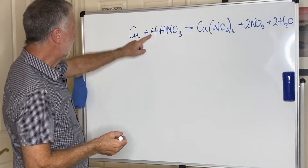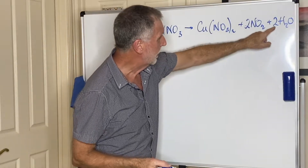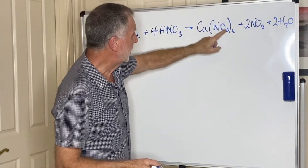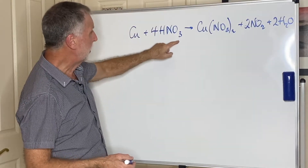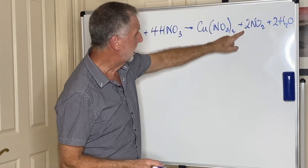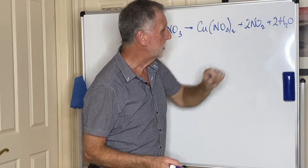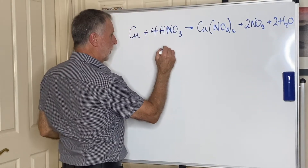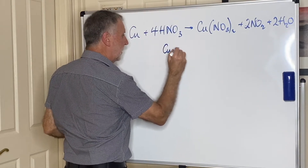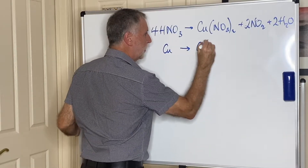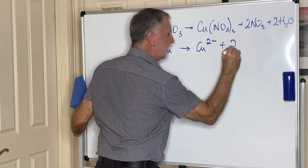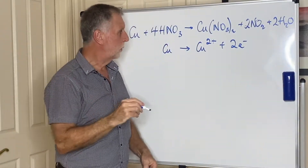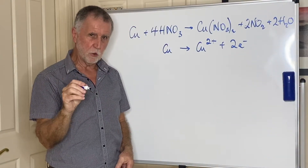The equation is balanced: one copper each side, four hydrogens, four nitrogens — two there and two there — and 12 oxygens: six, plus four is ten, plus two is twelve. The copper half equation we already know: Cu → Cu2+ + 2e⁻. The question asked for the other half equation.